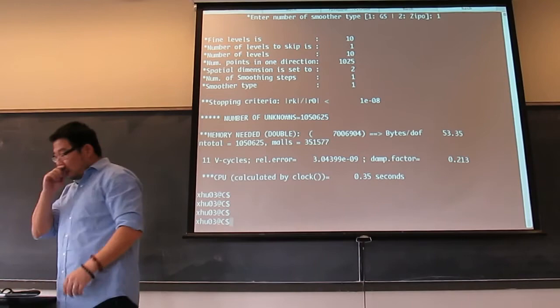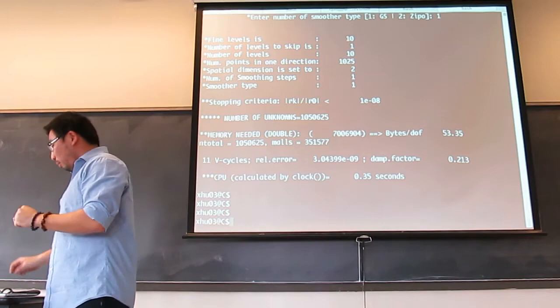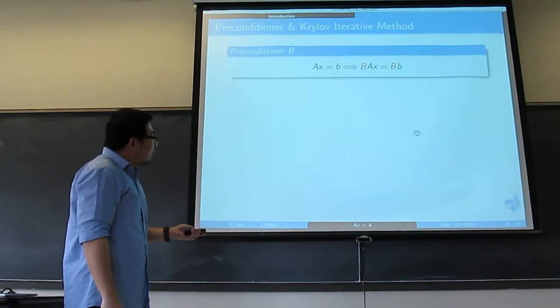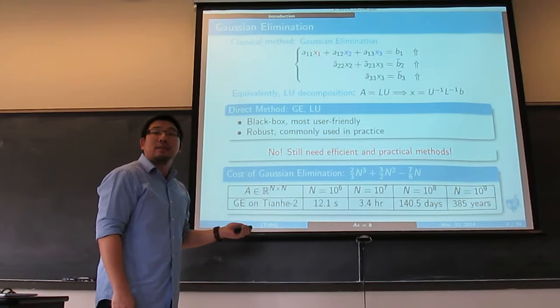How efficient can this be? Let's do some computations. I wrote a code implementing this multigrid. For comparison, for the direct method with size one million, it takes 12 seconds on the supercomputer.